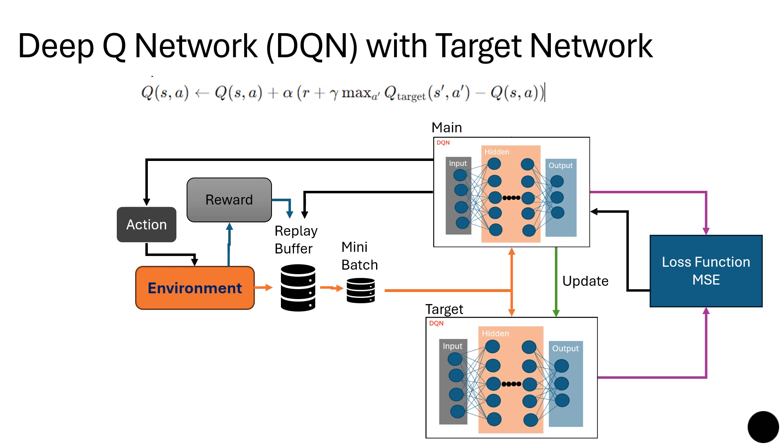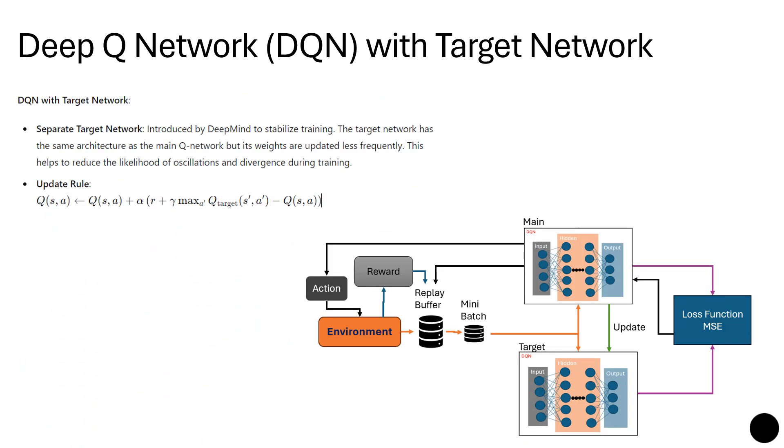These two, main and target network, get the Q value and this Q value goes to the loss function with MSE, mean squared error. And then the main network is updated and the main network will be the copy again of the target depending on the frequency you have set up. So DQ with target network is introduced by DeepMind to stabilize training. The target network has the same architecture as the main Q network but its weights are updated less frequently.